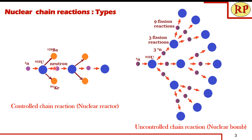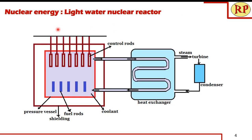To control this chain reaction, we allow only one neutron to react at a time with the uranium nucleus, and the excess neutrons are absorbed. This controlled chain reaction takes place in a nuclear reactor so that we can constructively produce electricity. In a controlled reaction, only three uranium nuclei are bombarded in three steps, whereas in the uncontrolled chain reaction, nearly 13 uranium nuclei react in three steps.